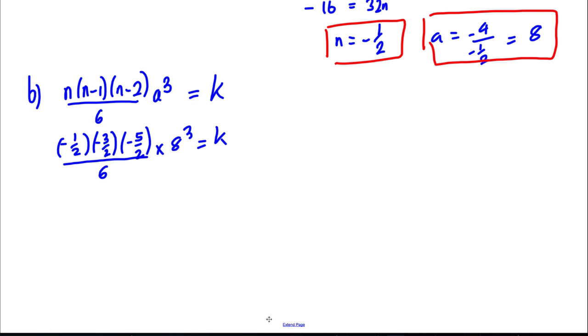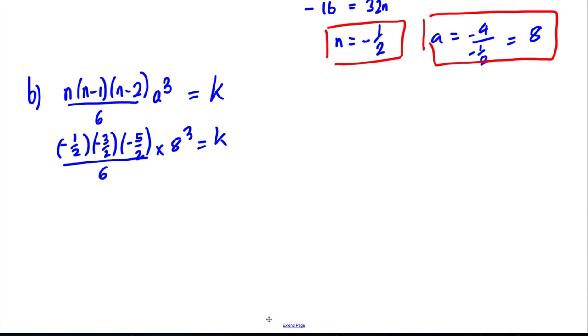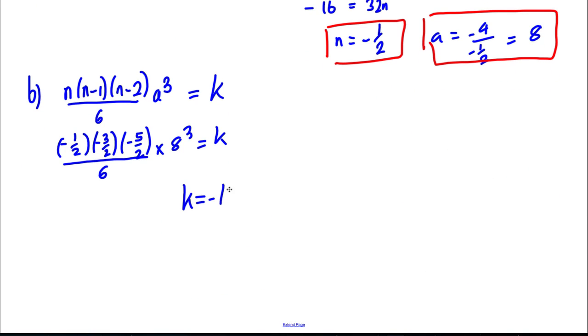And it's just a case of tapping that on the calculator. And it's telling us clearly then that K is indeed negative 160. So K is in fact negative 160 and we're done there.